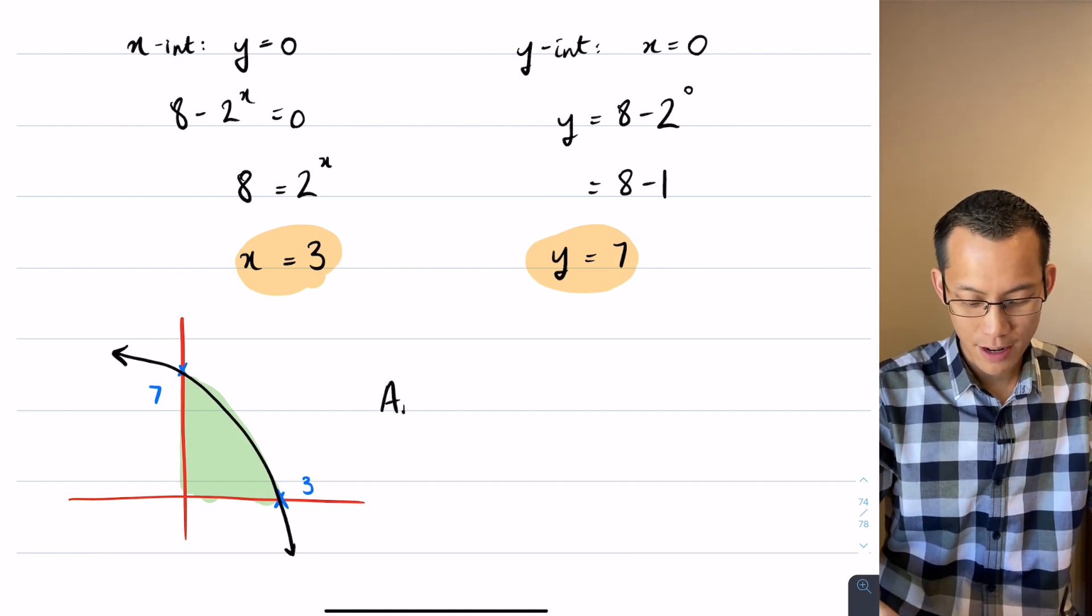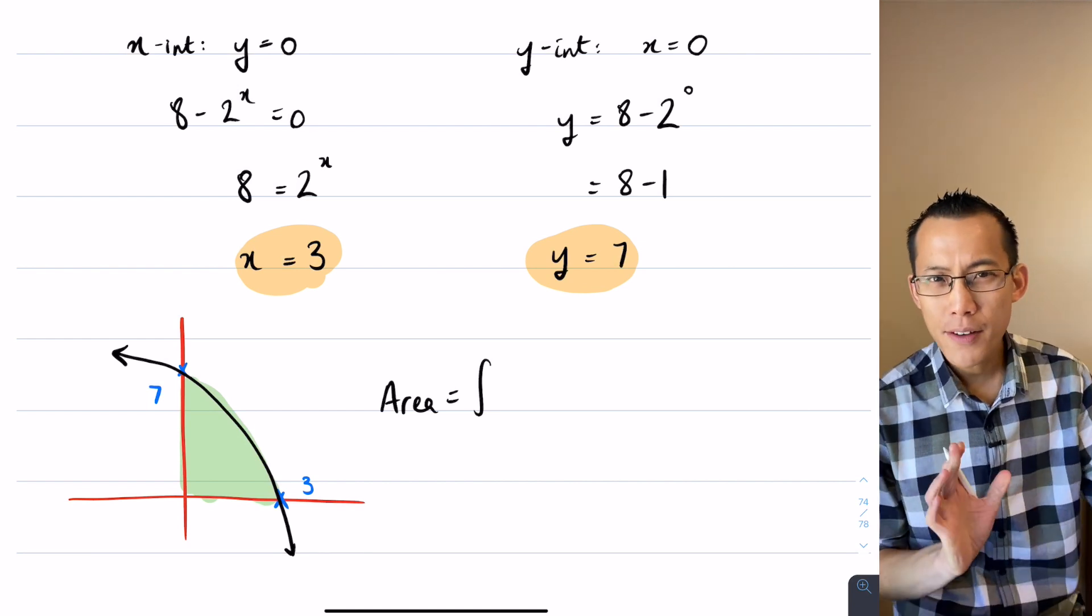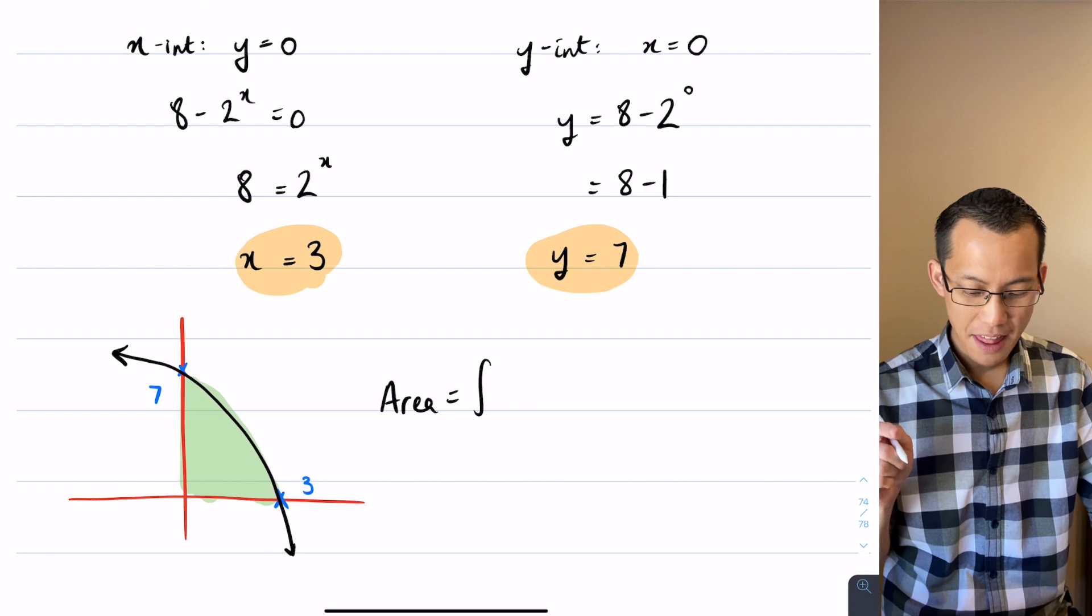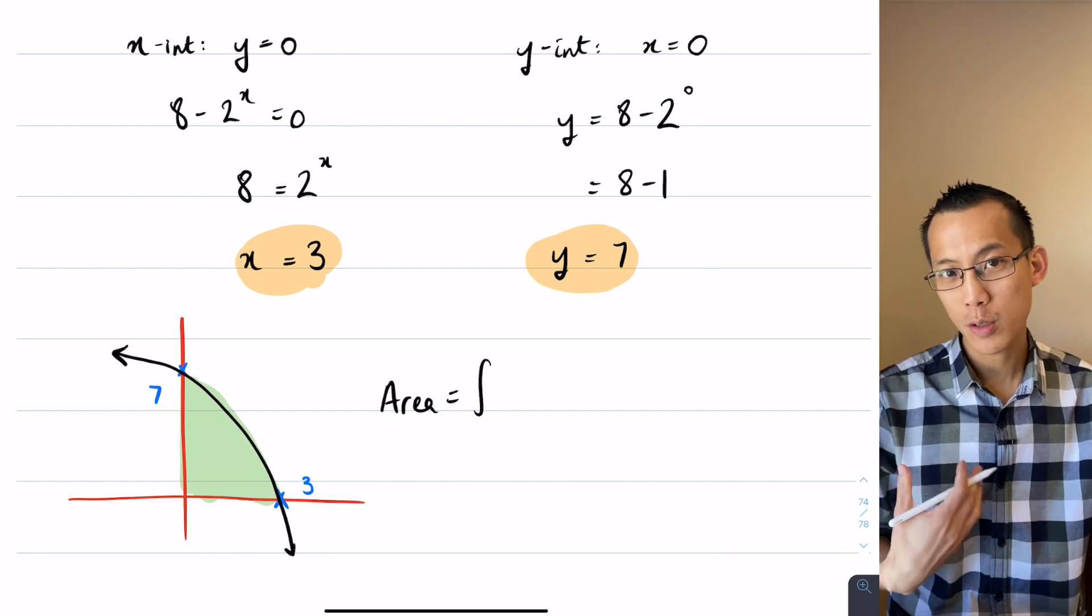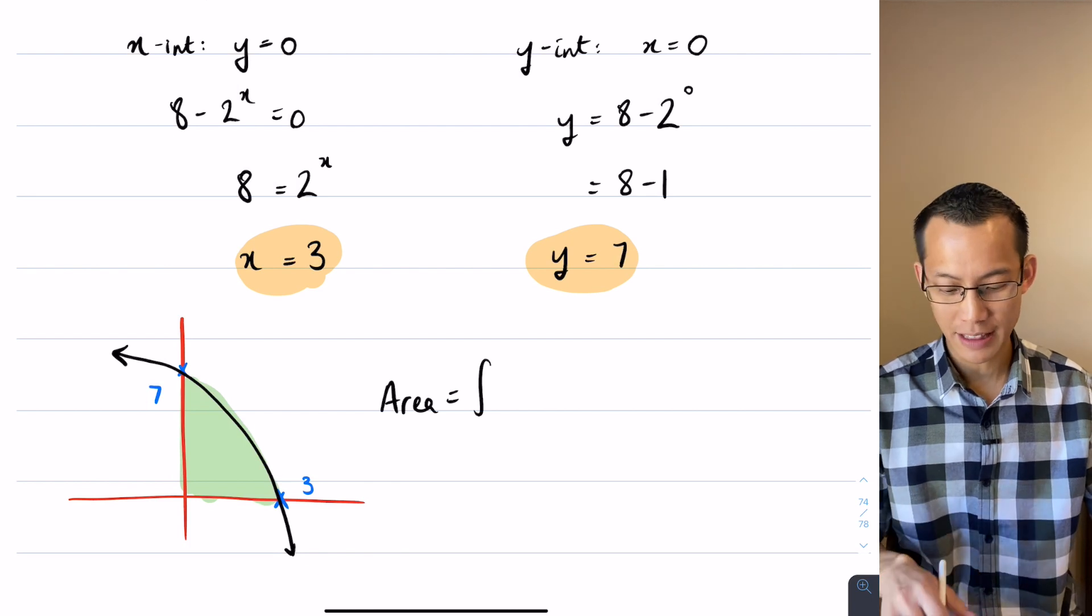So I'm going to say area equals, I need a lower bound and an upper bound. Now there's a bit of a red herring here. Because in fact, that y-intercept that we found, it helps us work out what the graph looks like, but we don't need it to actually work out the area.